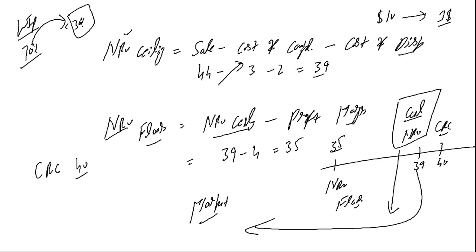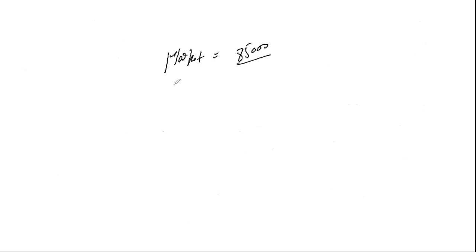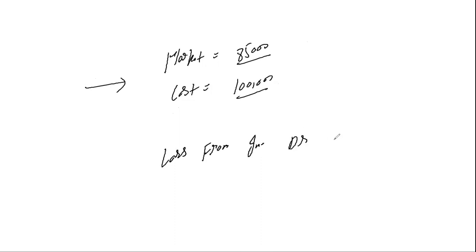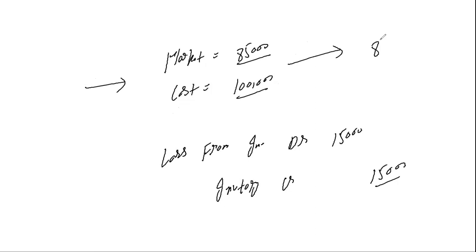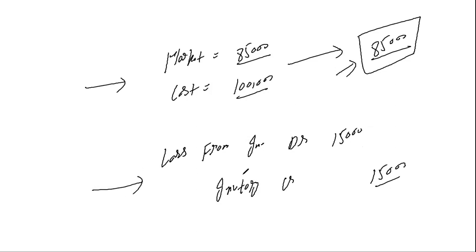Now for applying the LCM rule: say market is $85,000 and cost is $100,000. Applying lower of cost or market, inventory must be written down by $15,000. The journal entry is: debit Loss from Inventory Write-down $15,000, credit Inventory $15,000. With this entry, inventory appears at $85,000, which is the market — lower than cost. One important GAAP rule: once this write-down entry is passed, reversal is not possible.